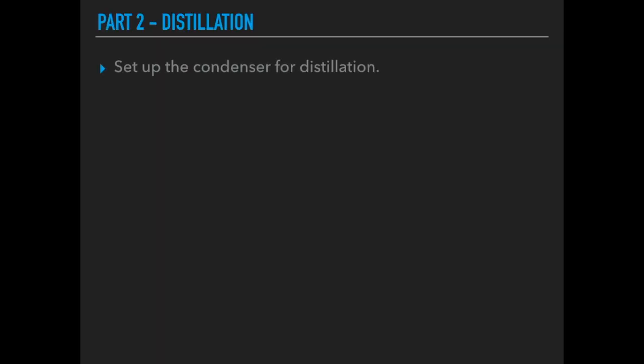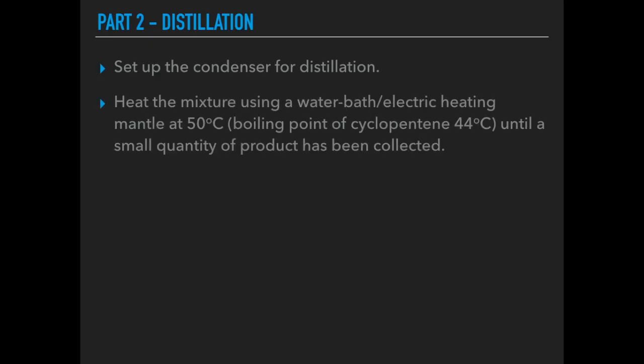Moving on to part two, the distillation step. Set up the condenser for distillation and heat the mixture using a water bath or electric heating mantle at 50°C. The boiling point of cyclopentene is 44°C, and there is also water in the flask produced during the reaction. Keeping the temperature to around 50°C means the cyclopentene should distil over while the other substances, including the water, remain behind.